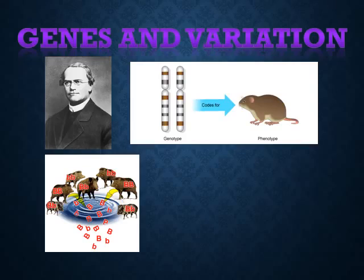An organism's genotype is the particular combination of alleles it carries. An individual's genotype, together with environmental conditions, produces its phenotype. Phenotype includes all physical, physiological, and behavioral characteristics of an organism, such as eye color or height.